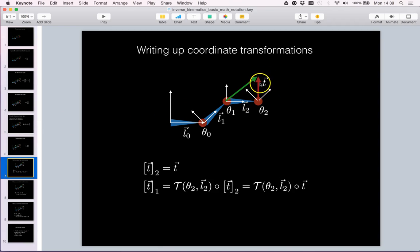Initially we are given the tooltip vector in link coordinate frame 2. So that means implicitly that T is given in T2. We write it with this index notation where the bracket parameters with the subindex indicate which frame we are referring to.